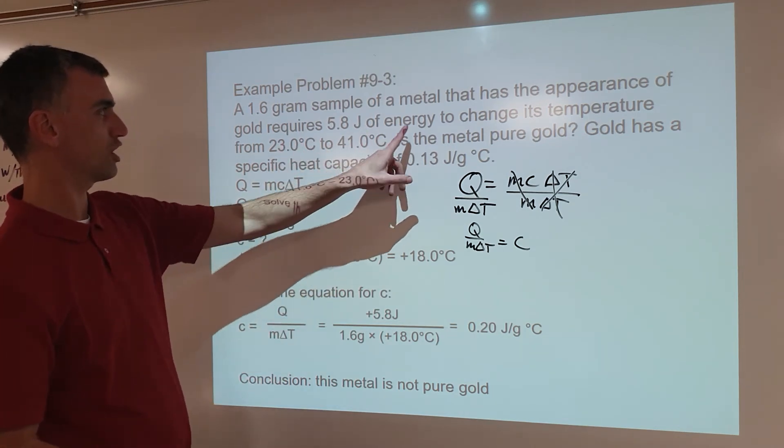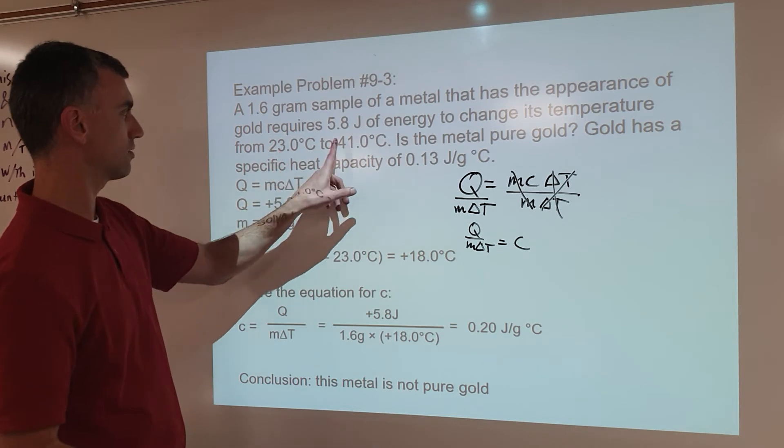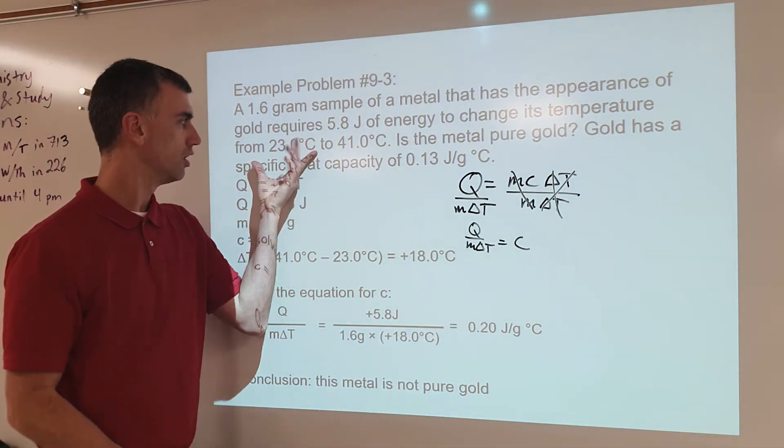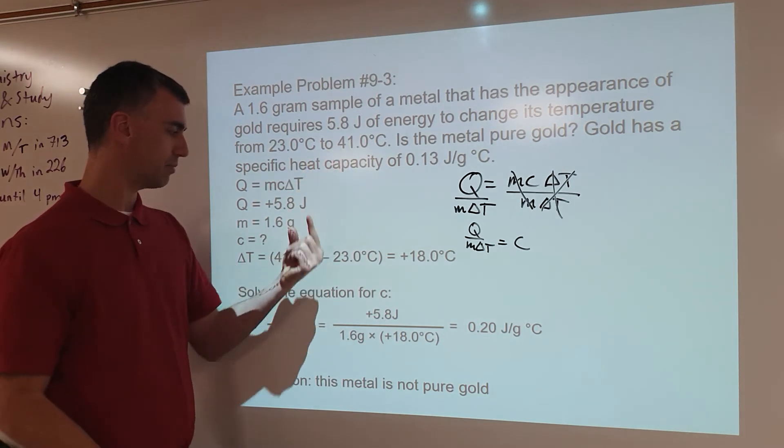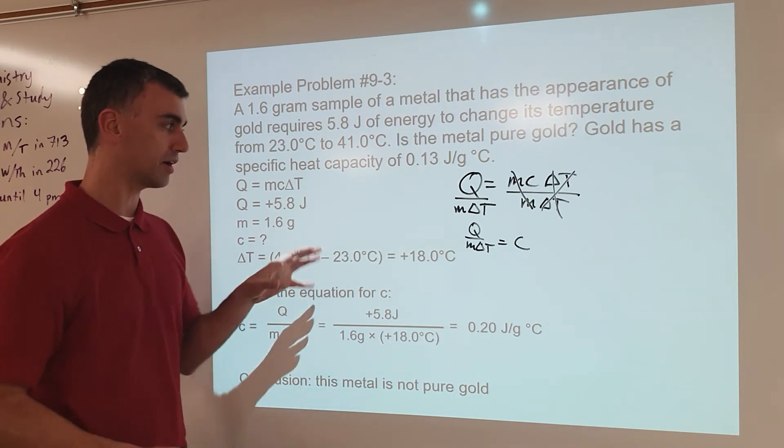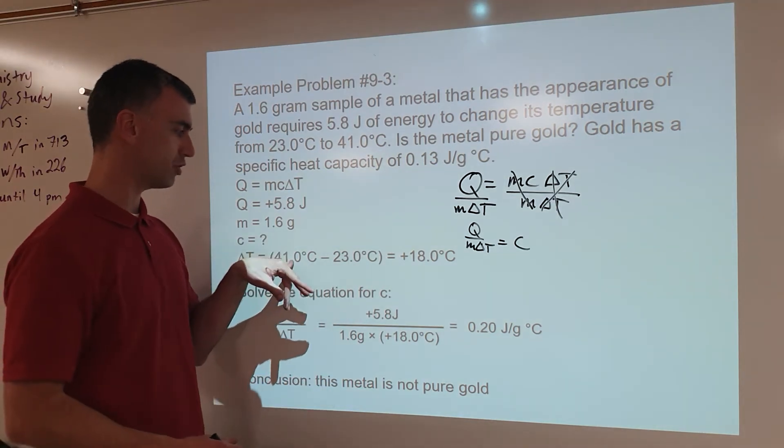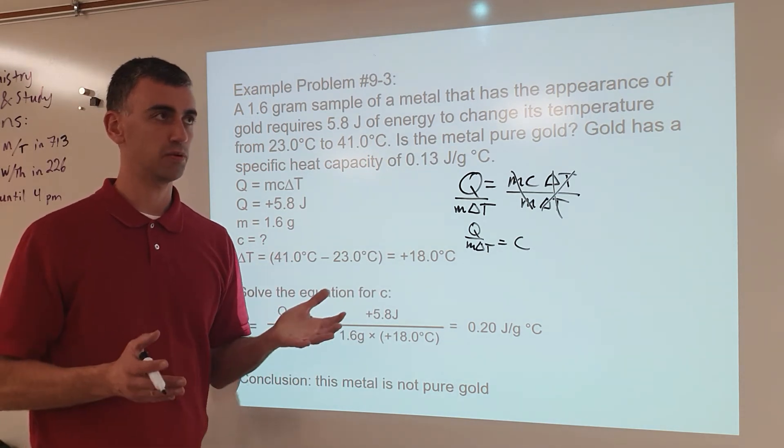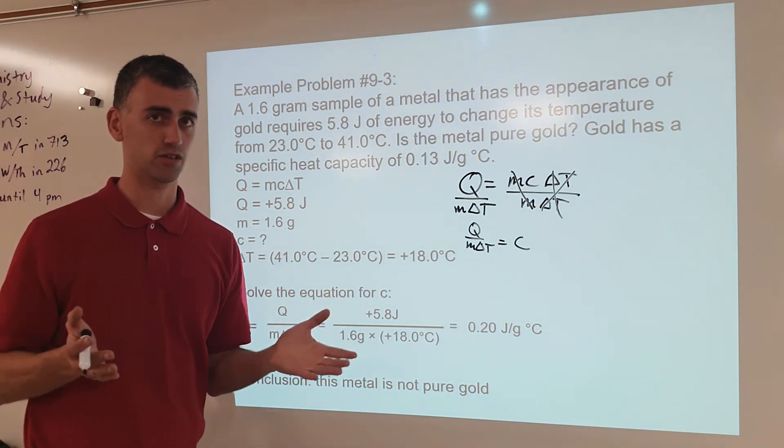It says changes temperature from 23.0 to 41.0. Hopefully it's clear that this is a rise in temperature. Whenever the temperature goes up, your ΔT must be positive. Now when people calculate this, the correct formula is final temperature minus initial temperature equals change in temperature. And when I've told people that, they get it right sometimes and sometimes they just screw up.